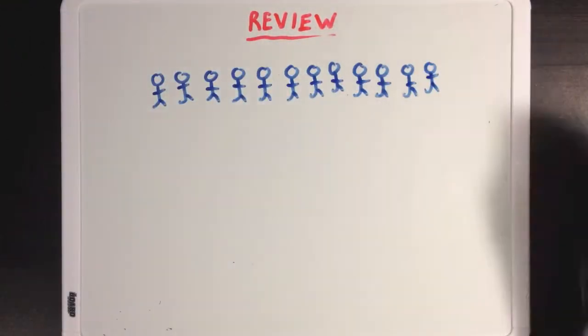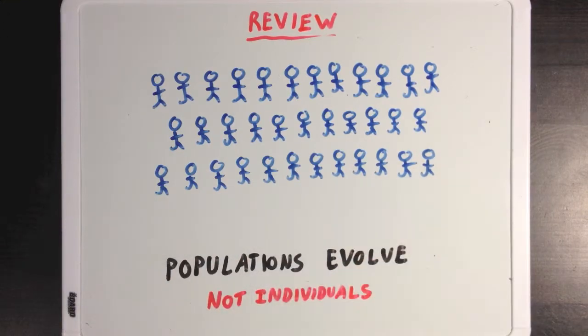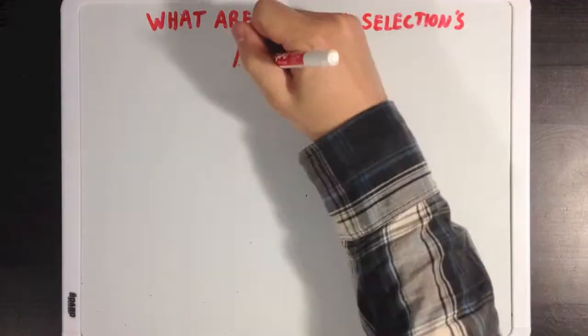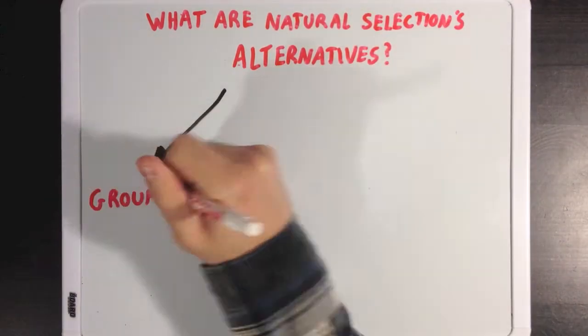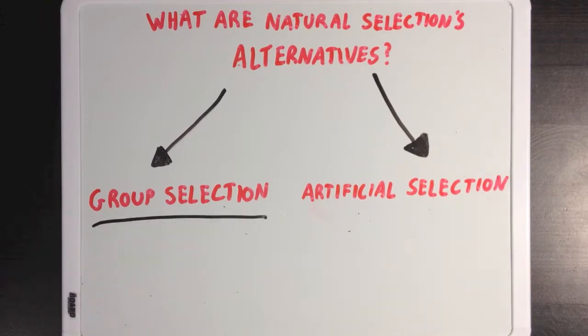Also remember that populations will evolve by natural selection, and not individual members of those populations. So what are natural selection's alternatives? Well, we're going to talk about two today, group selection and also artificial selection. So let's start with group selection.